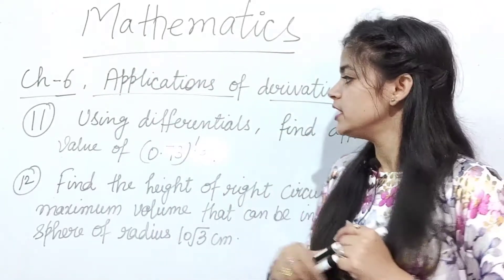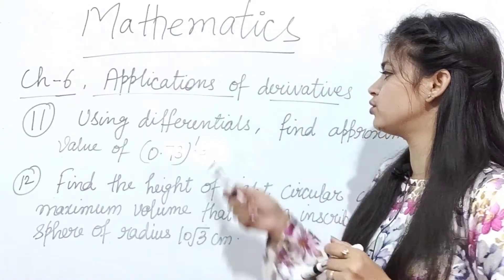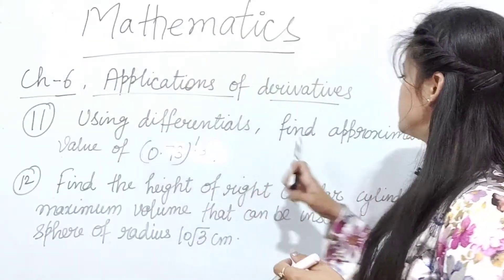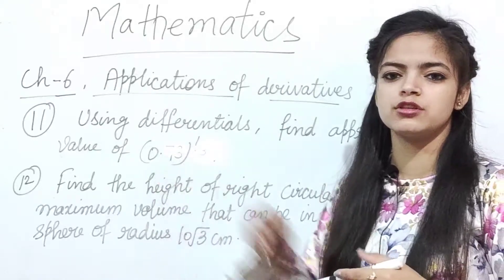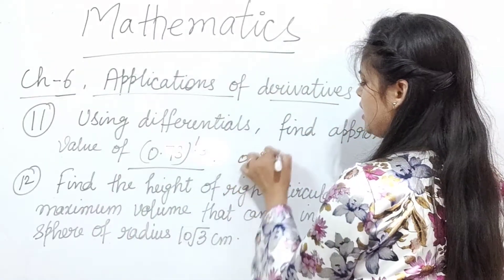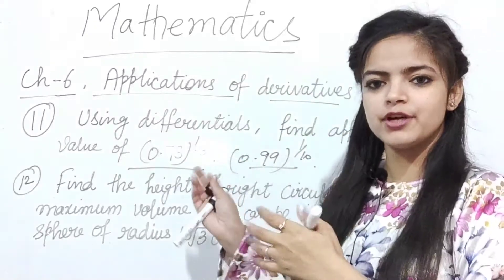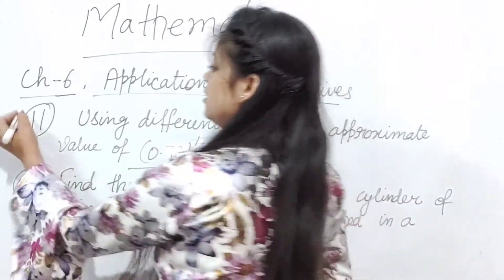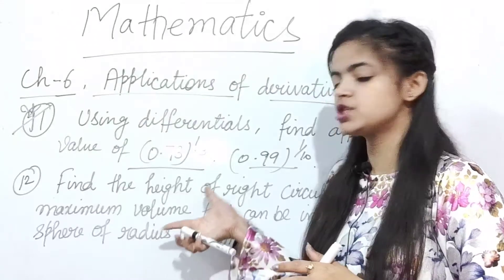Our next chapter is chapter number 6, Applications of Derivatives. The main question that is constantly repeating is: using differentials, find the approximate value of something — for example 0.99 raised to the power 1/10, or something else. This type of question is very important.